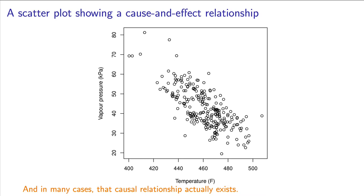Scatter plots compel the reader to infer a cause and effect relationship between the variables plotted. In this case, increasing temperature, the cause, will lead to a decrease in vapor pressure, the effect.